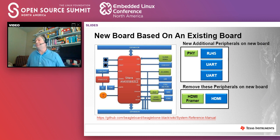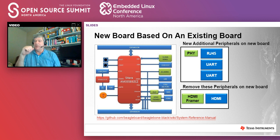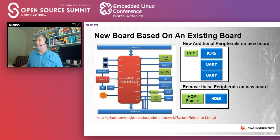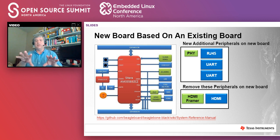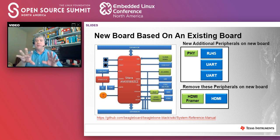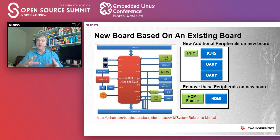If you start with a BeagleBone Black or any existing processor board and want to change it — say you want to add another ethernet port, an RJ45 with a PHY, a couple of UARTs, and remove the HDMI — you've changed it enough that you can't just drop in the previous DTS file. You could try, but minor changes can cause things to go wrong, and the board hardware itself could also have issues. The approach here is to start with a minimal hello world and then add everything else iteratively.